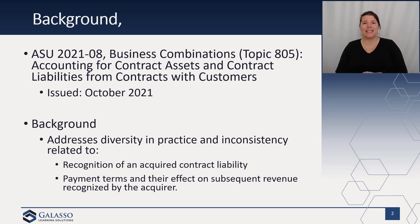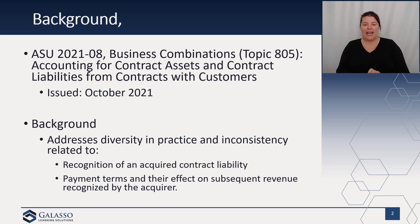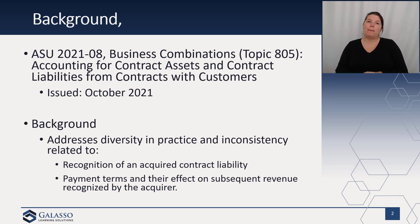Typically we apply Topic 805, business combinations, which requires acquisition accounting. However, the question was: is acquisition accounting, which has a lot of fair value, appropriate if we've adopted Topic 606? And so there were different beliefs — diversity in practice — regarding what was the appropriate recognition of these acquired contract assets and liabilities, and how payment terms would affect subsequent revenue recognition by the acquirer.